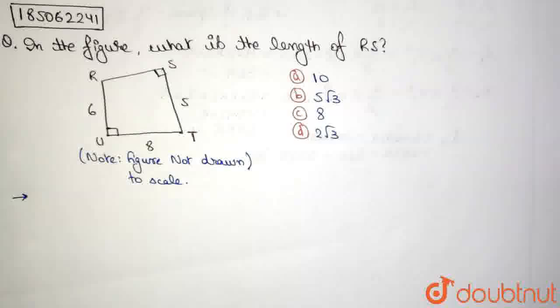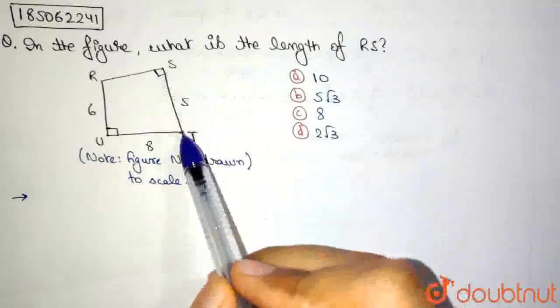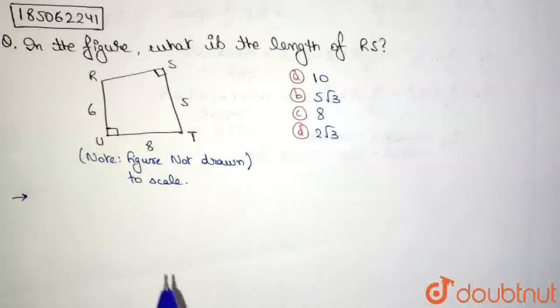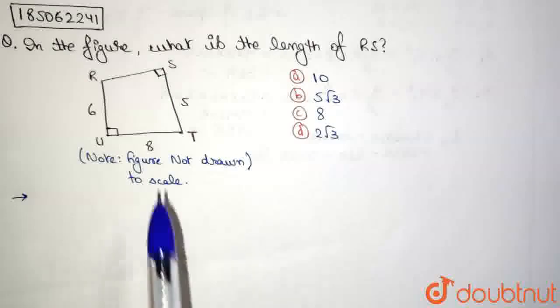Because if the figure was drawn to scale, then we could say, okay, this is 5, so this is a bit less than 5, so it can be 4. But it is mentioned that figure not drawn to scale. That means we need to proceed with the calculation method. So we need to calculate the value of RS, which is side RS.